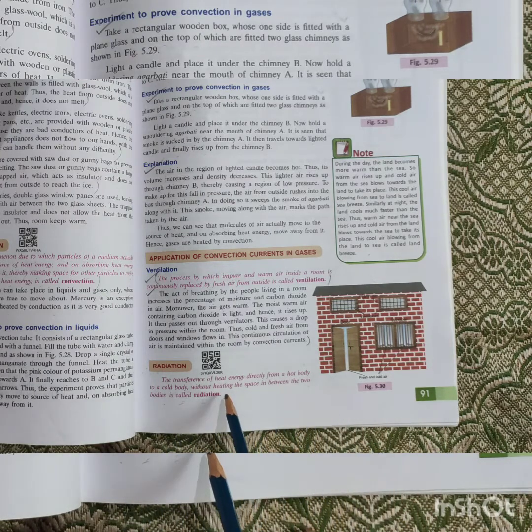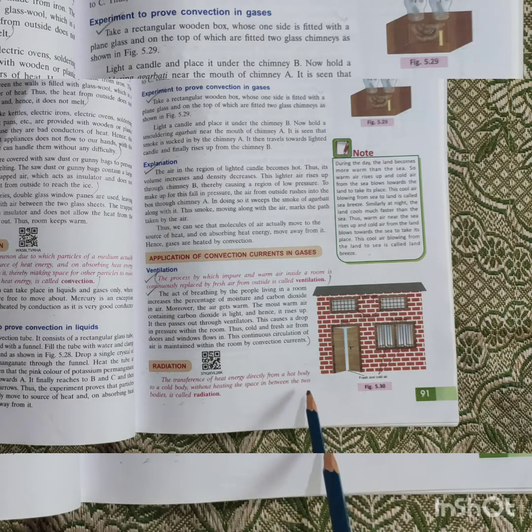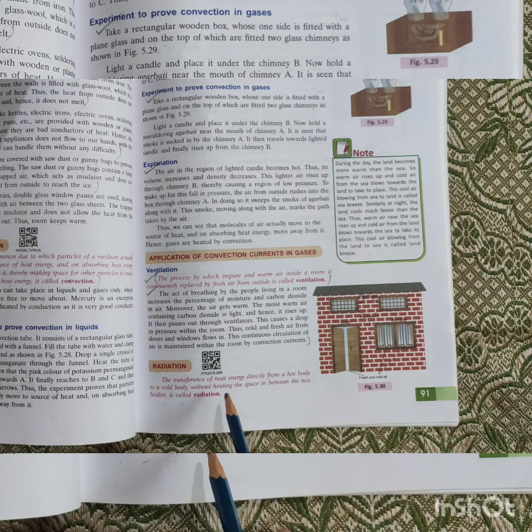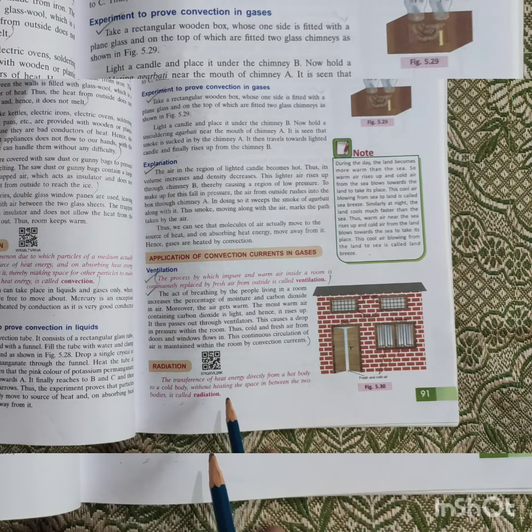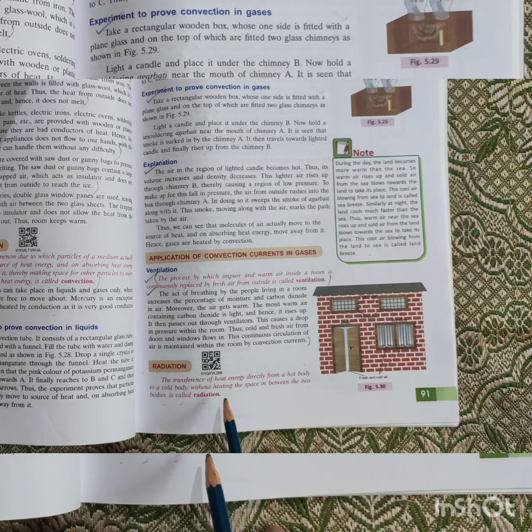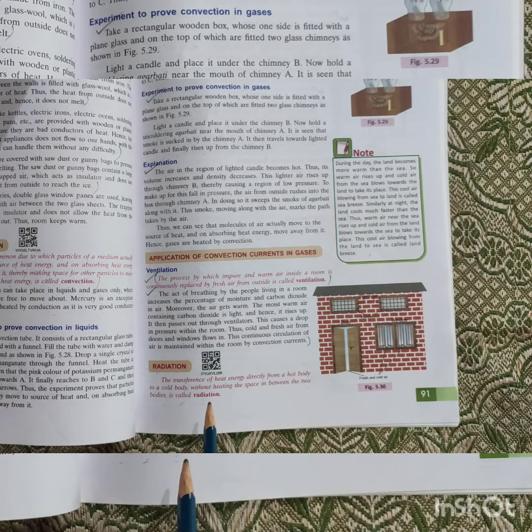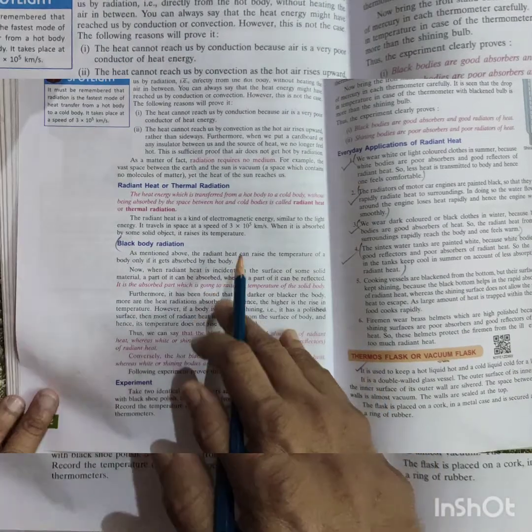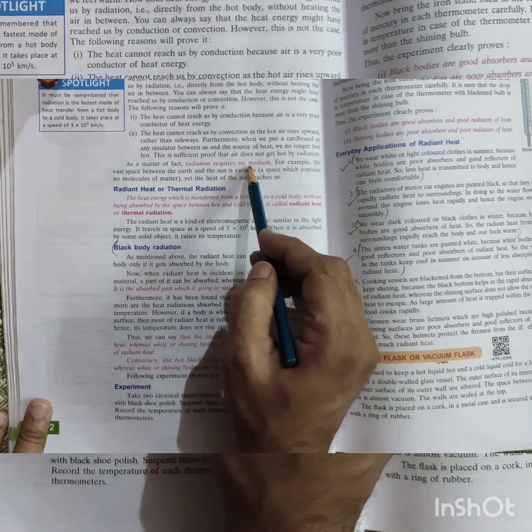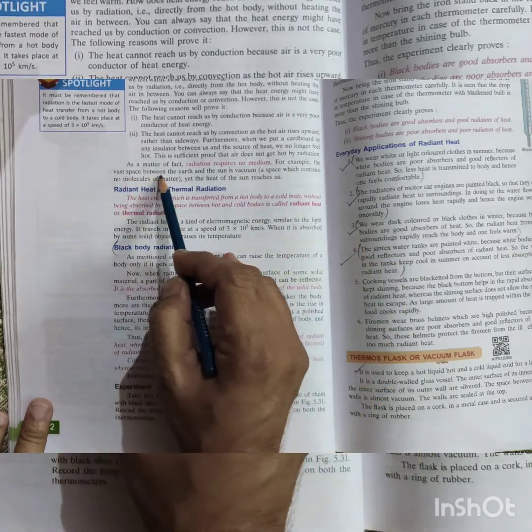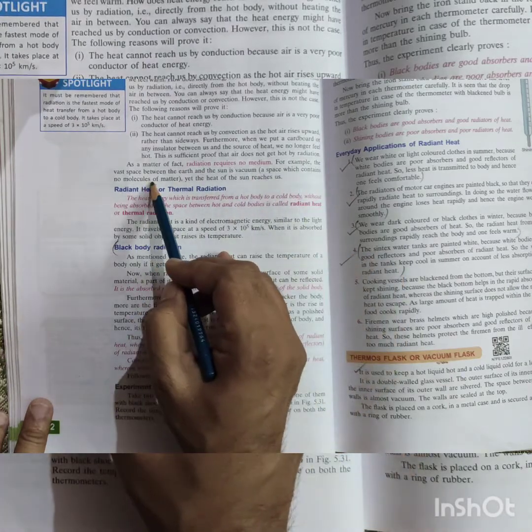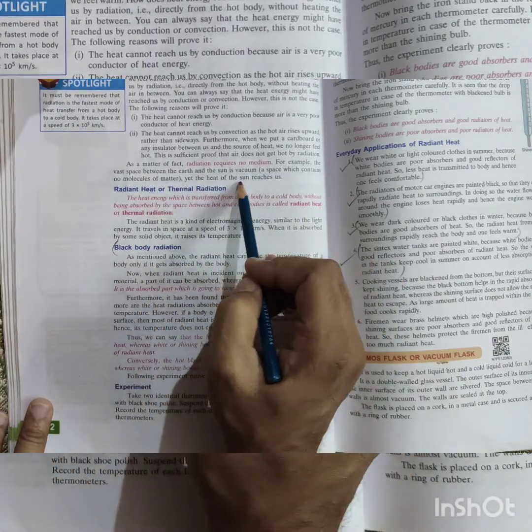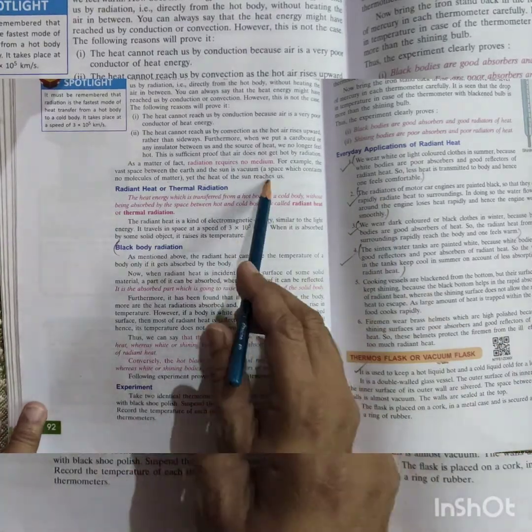The greatest example is light and heat from the sun. This is one of the examples of radiation. And in radiation, there is no medium involved. As I said, radiation requires no medium. For example, the vast space between the earth and the sun is vacuum, a space which contains no molecules of matter, yet the heat of sun reaches us. This is one of the greatest examples we have.